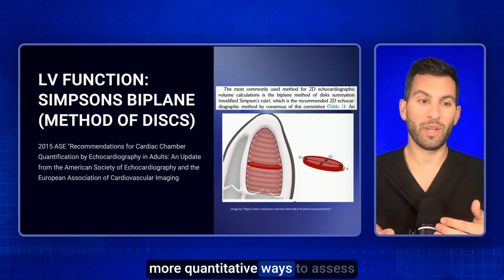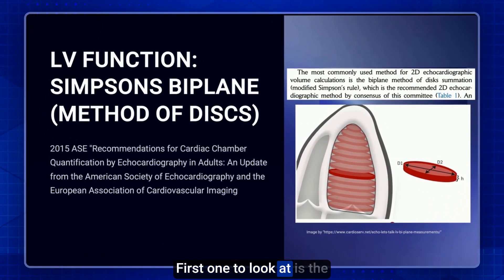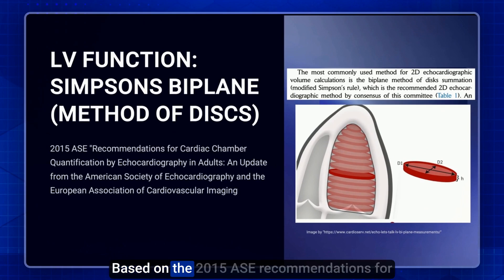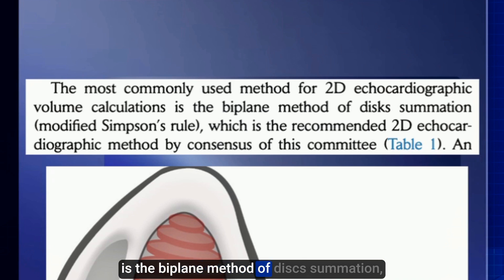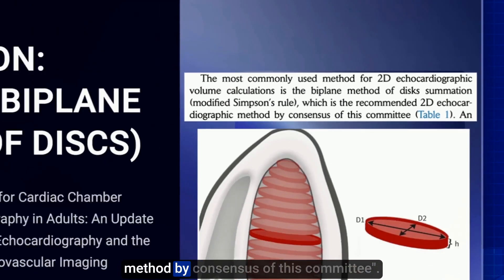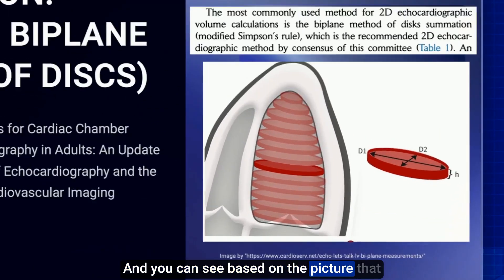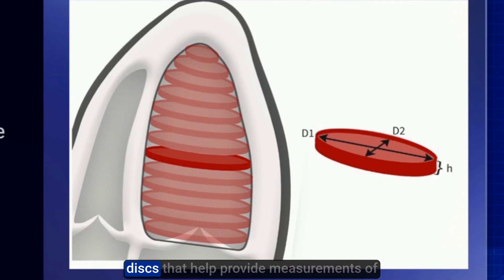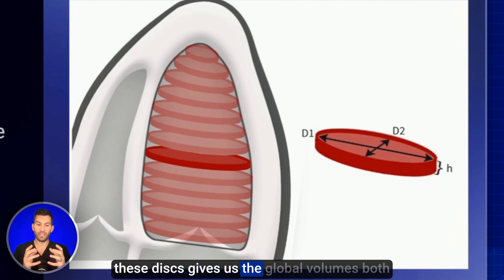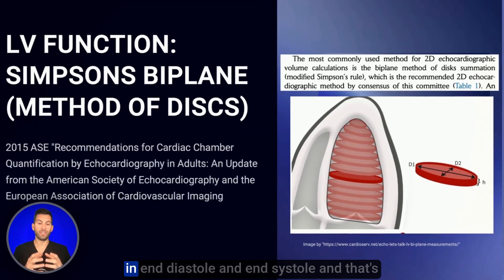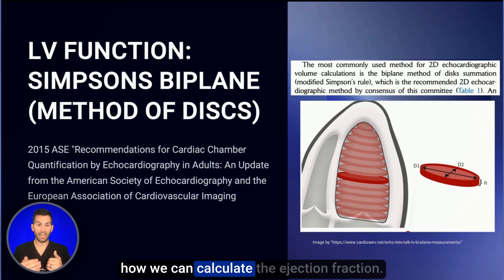For more accurate and quantitative assessment, the first method is the Simpson's biplane method of discs. Based on the 2015 ASE recommendations for chamber quantification: the most commonly used method for 2D echocardiographic volume calculations is the biplane method of disc summation, or the modified Simpson's rule, which is the recommended 2D echocardiographic method by consensus of this committee. We essentially add up the volumes of discs to measure the left ventricle, and the summation gives us global volumes in end diastole and end systole to calculate the ejection fraction.